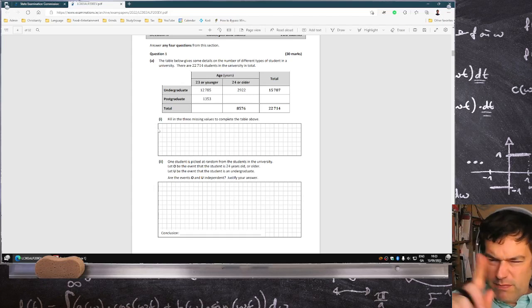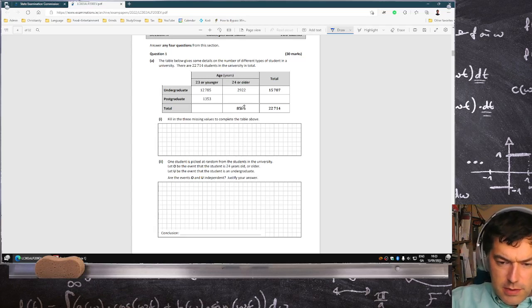Okay, so this isn't too bad. The total here has to be 8,576, so it's 8,576 minus 2,922. That's 5,654. And then total down here...